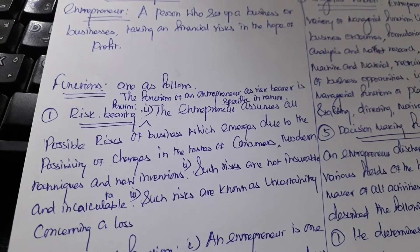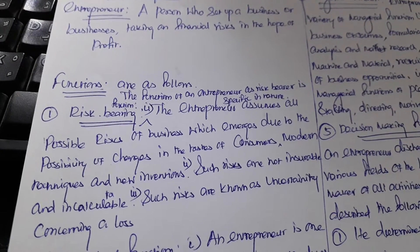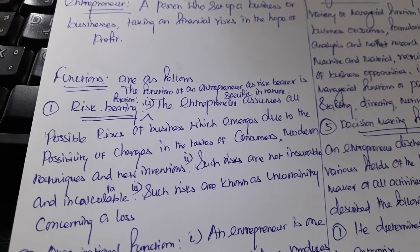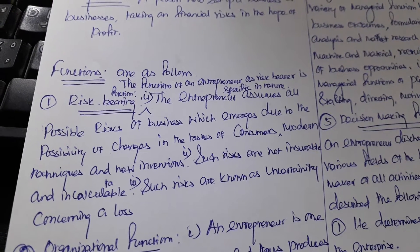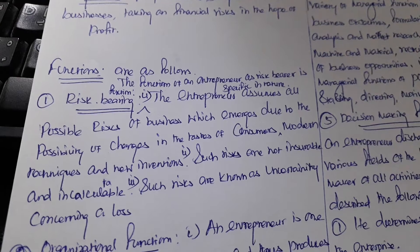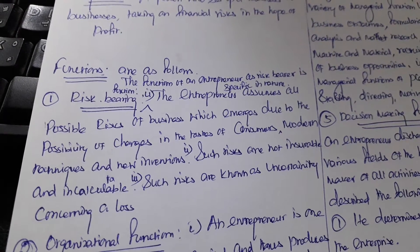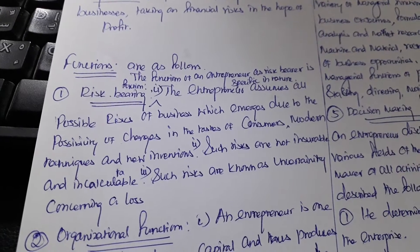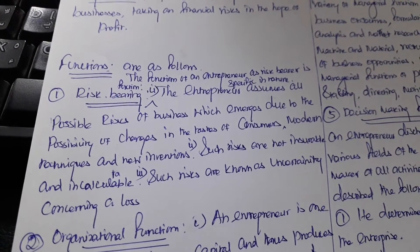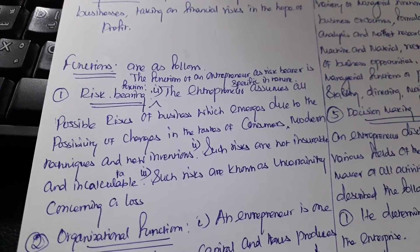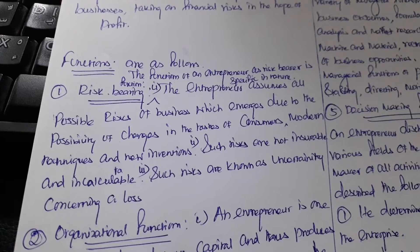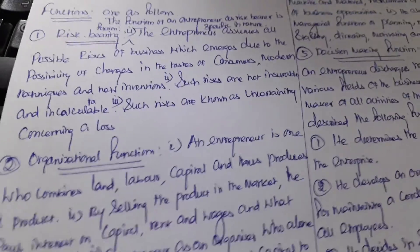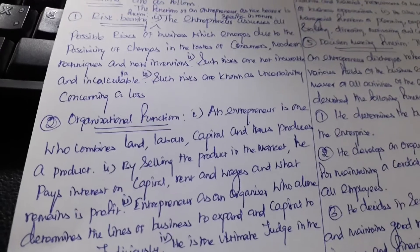The risk is based on consumers' changes in taste and preferences and the innovations of new techniques and new inventions. At that time, the quantity of risks is more. Such risks are not insurable and incalculable. Certain risks are insurable, like fire and theft. Such insurable risks are known as uncertainty concerning a loss, and such risks result in a big loss.